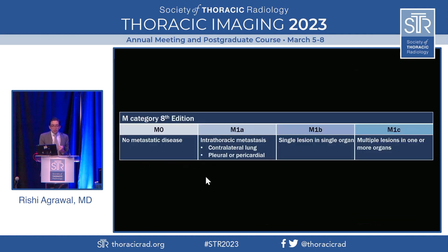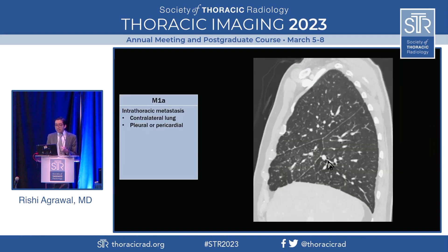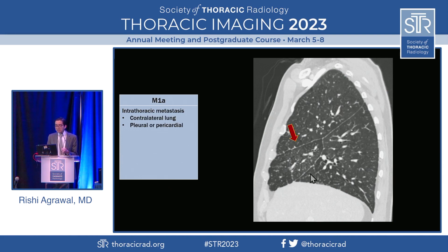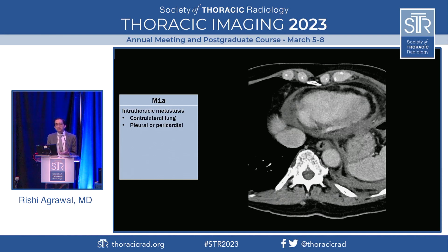For metastases, the M category goes M0 (no metastatic disease), M1A (intrathoracic mets — contralateral lung, pleura, or pericardium), M1B (single lesion in a single organ), and M1C (multiple lesions in one or more organs). Sagittal images are very useful for evaluating the pleura and fissures. In one patient, nodular studding of the minor and major fissures indicates pleural metastatic disease. Any patient with pericardial effusion should be scrutinized for nodular studding of the pericardium, which also indicates M1A disease.